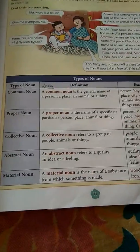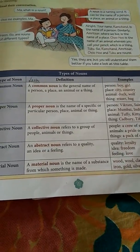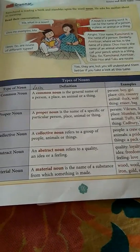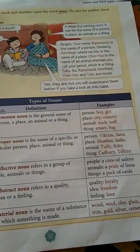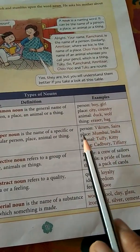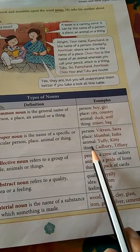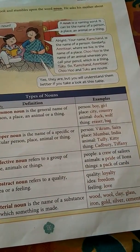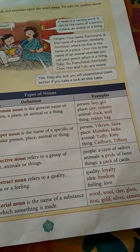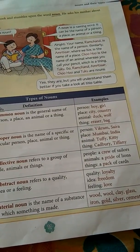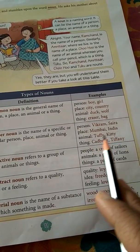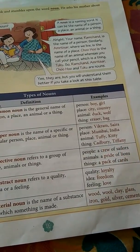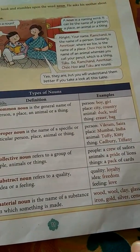Proper noun: a proper noun is the name of a particular person, place, animal, or thing. For example, as we saw: Ramchand, Amritsar, Chuhu, and Tuku. Person — Vikram, Saira. Place — Mumbai or India. Animal — Tuffy, Kitty — like you name your pet. So these are different names you keep for your pets and they are proper nouns. Thing — Cadbury, Tiffany. These come under proper nouns.